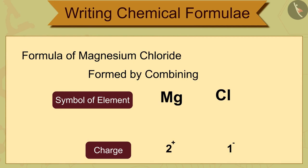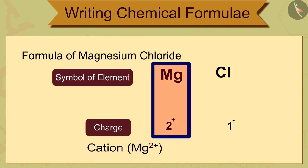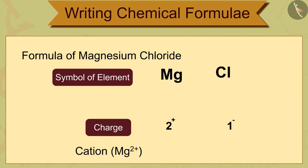To find its formulae, we write the symbol of cation, Mg2 plus, first, followed by the symbol of anion, Cl minus.